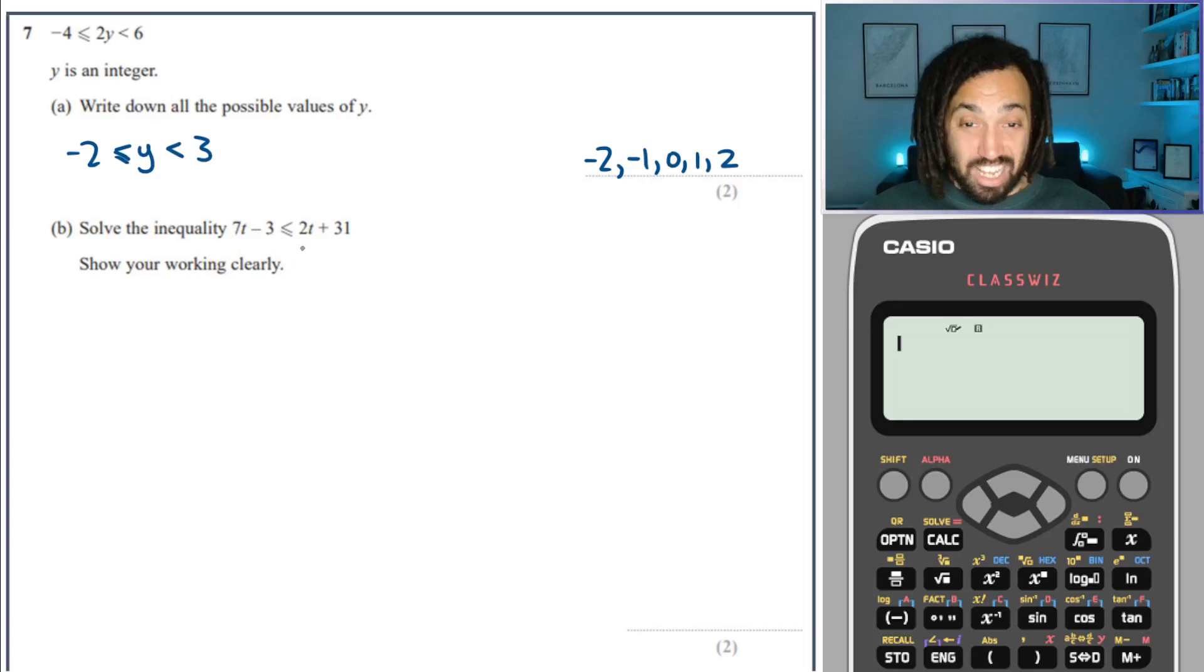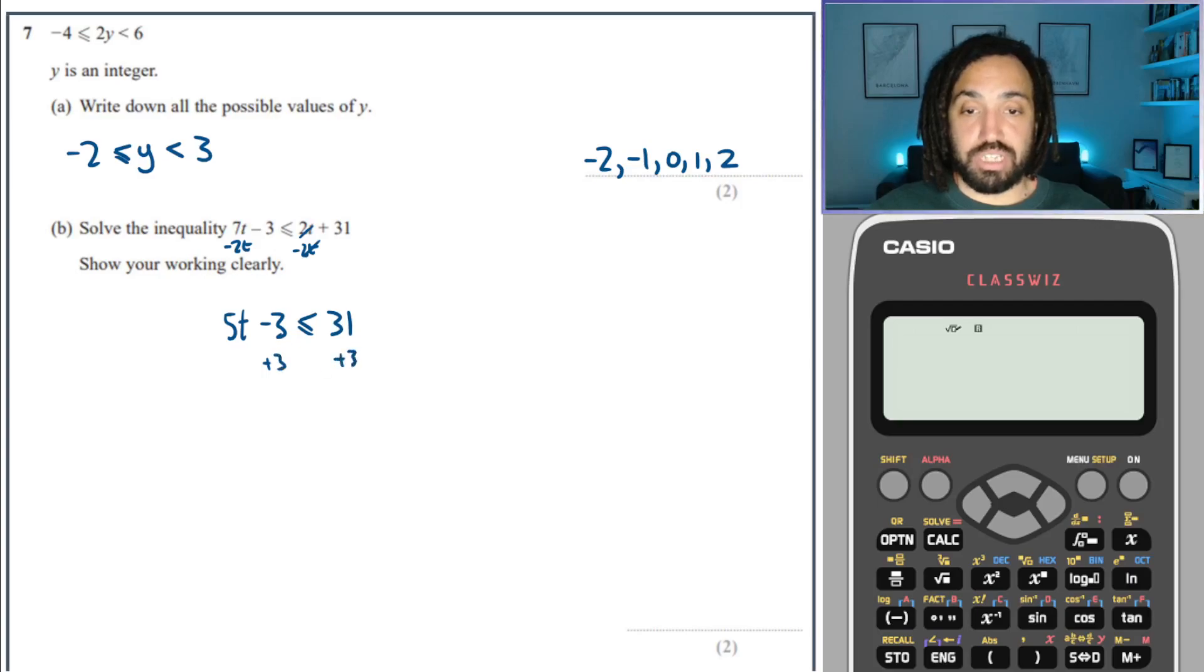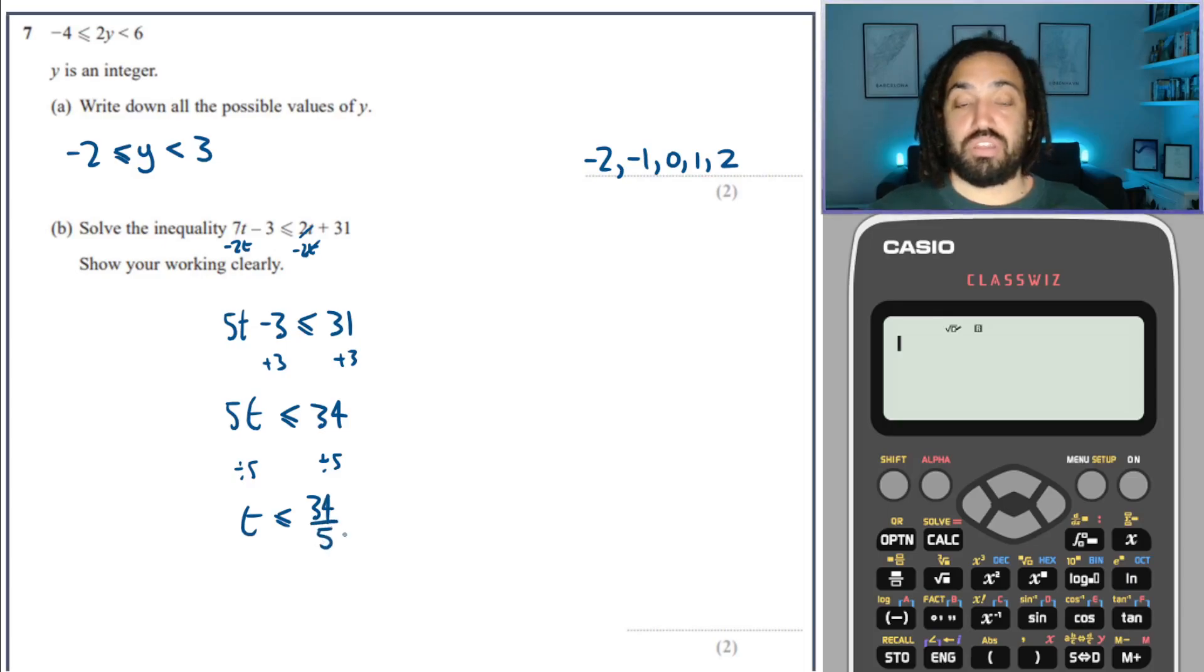This one again I'm going to move the smallest t term. So I'm going to subtract 2t from both sides. Cancel, cancel gives me 5t minus 3 is less than or equal to 31. Add the 3 to both sides gives me 5t is less than or equal to 34. Divide through by 5 is going to give me t is less than or equal to 34 over 5. Beautiful.